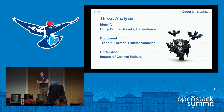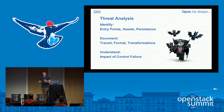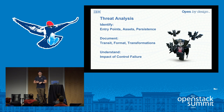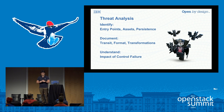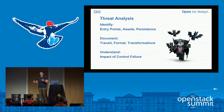Any threat analysis process should be able to identify entry points, assets, and persistence within a system. It should document where data transits, where it goes through format changes and transformations, where it's stored, the origin, and the destination. That's because this is where most vulnerabilities come from. A huge number of vulnerabilities just come down to changing data from one format to another without really thinking about what you're doing - from reading it off disk into memory, from parsing. And one of the main things we have here is impact of control failure. Our aspiration is to create a system with a rich enough set of documents that when a project has a vulnerability, the VMT or that project can look at their threat analysis and understand the effects of that control that just failed.